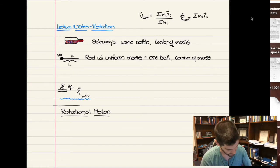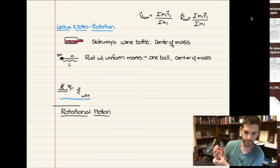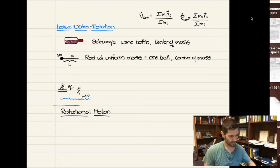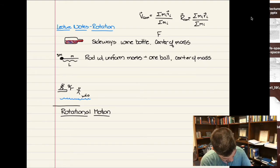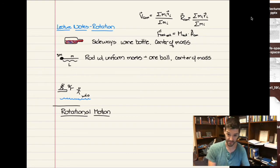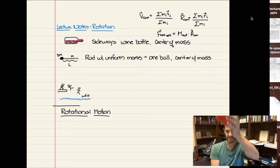Similarly, for the center of mass position, we add up all the mass times the positions of all the individual little objects that make up an extended object. And we argued, using momentum, that the net external force acting on the system equals the total mass of the system times the acceleration of the center of mass.